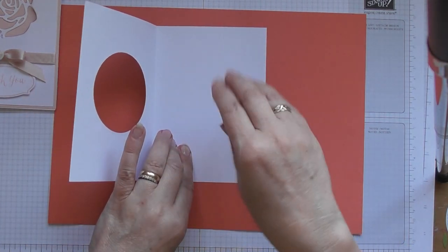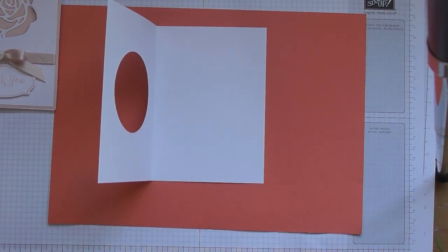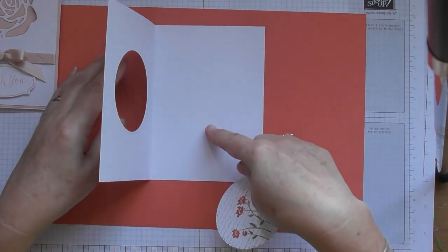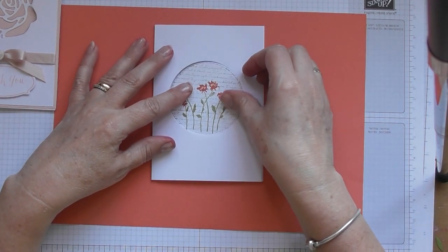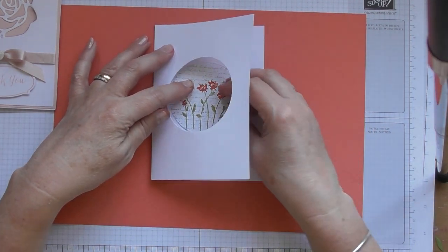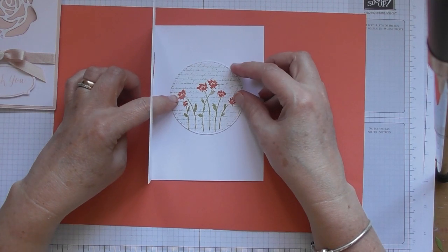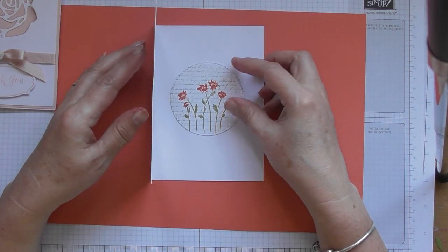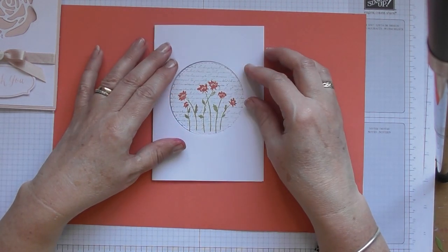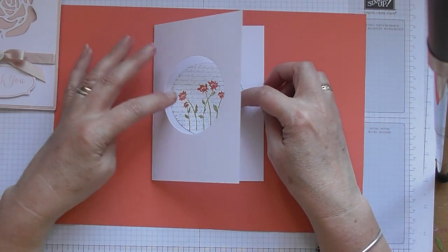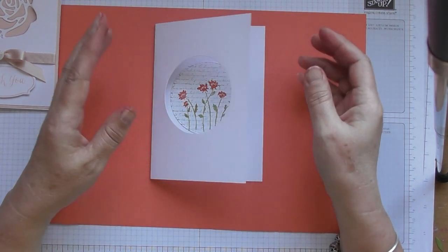And then you can just erase the line, you can just decorate the piece you've stamped on, which is what I did here. I've just stamped on the piece that I die cut out for that one.